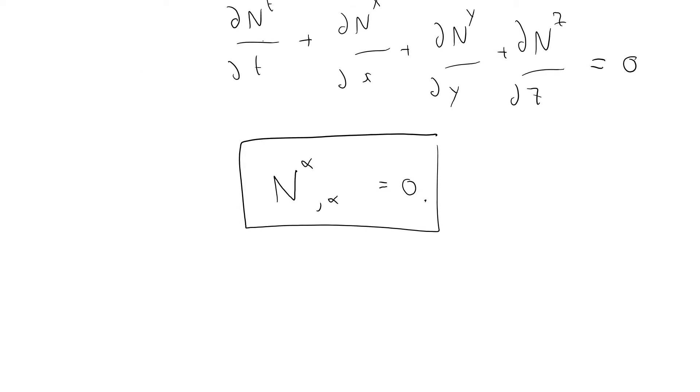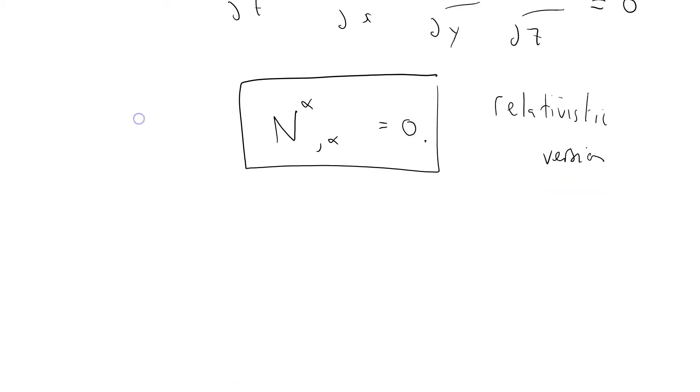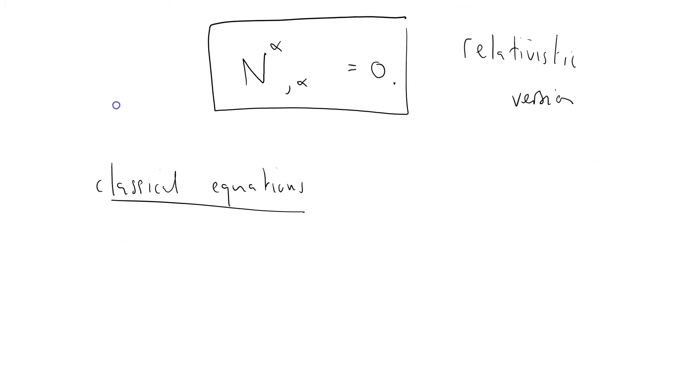Let me show you, this is the relativistic version. Let me just talk about classical equations now. And what we get, the classical equivalent of this statement here, will be di N by di T plus the divergence of NU equals zero.